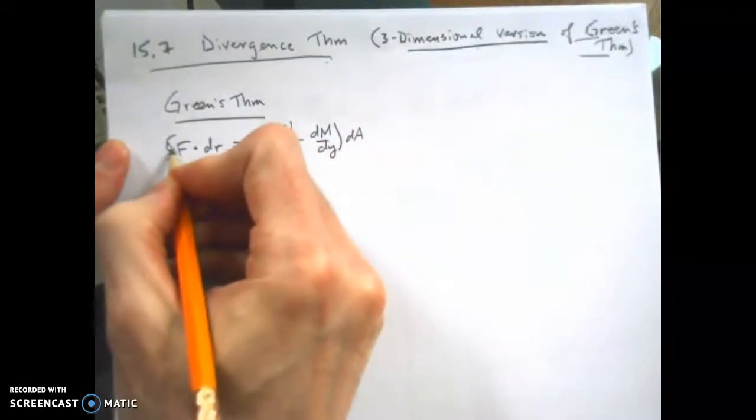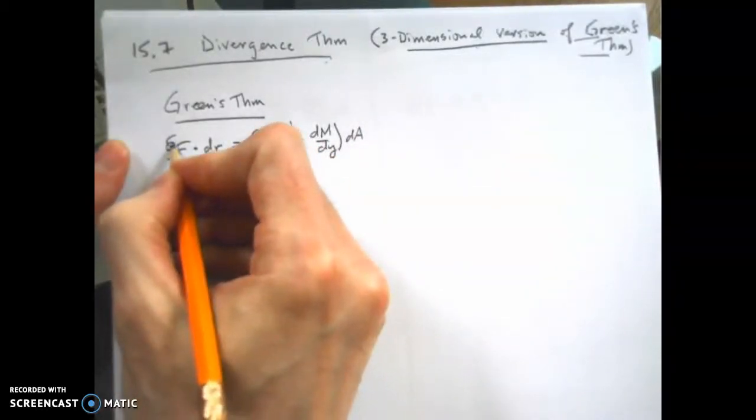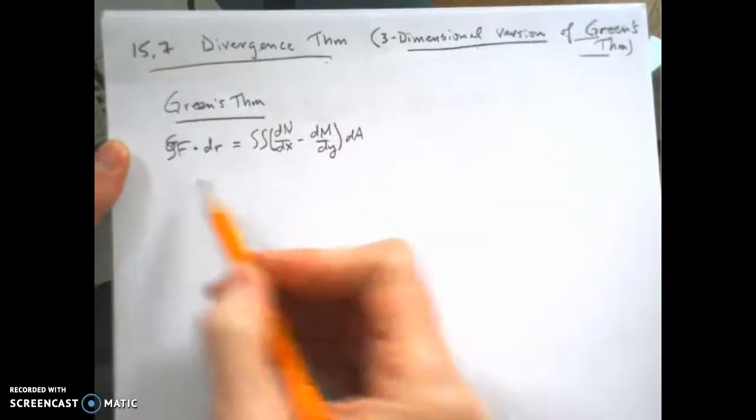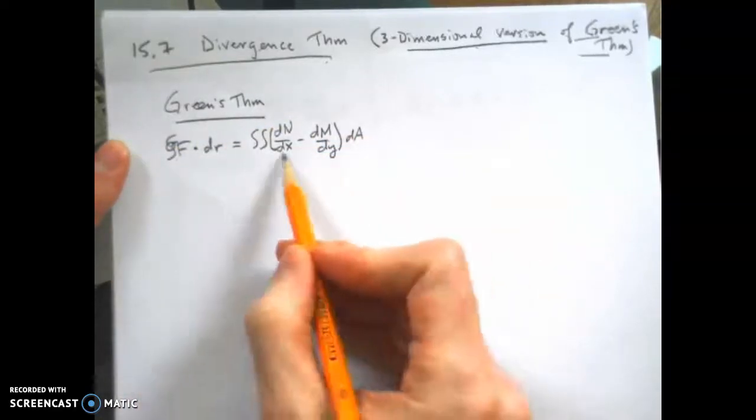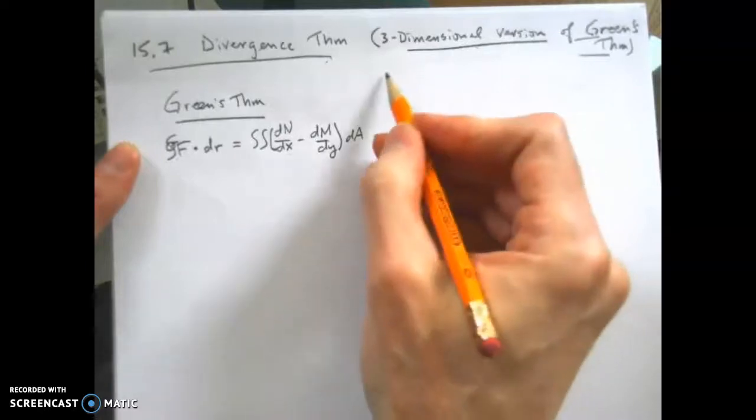And this has to be on a closed curve, meaning it starts and ends at the same place, because it has to enclose an area or a region inside the curve.